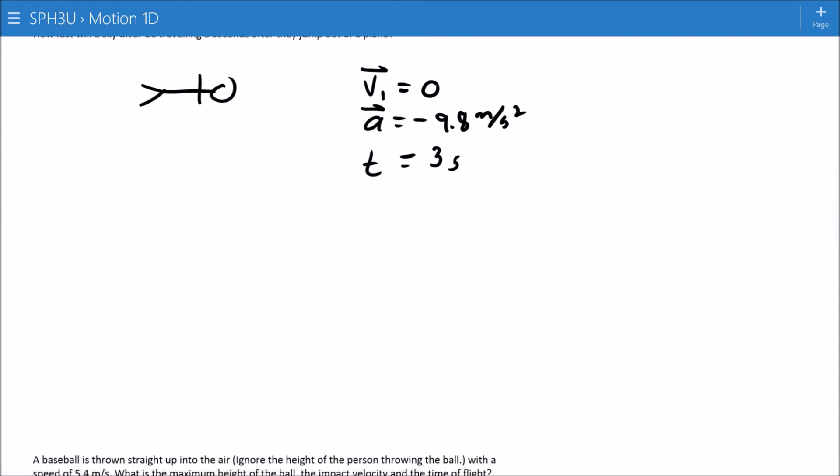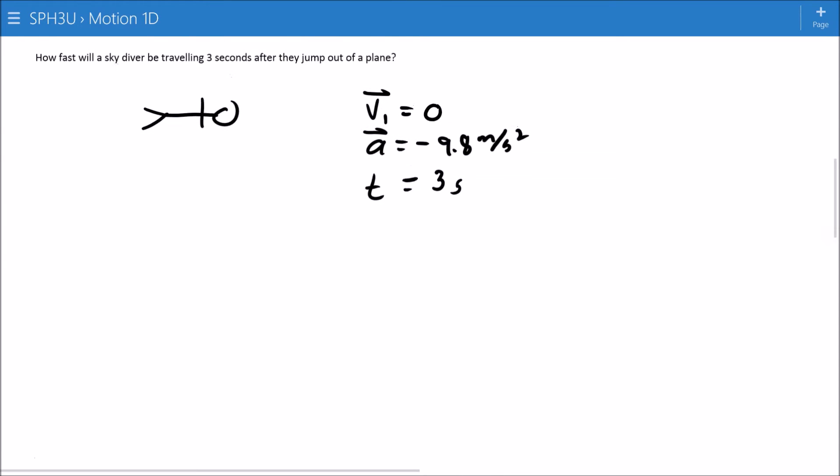So we have V1, A and T and we're just missing, it asks how fast will they be going. So we're just missing the final velocity of the skydiver.